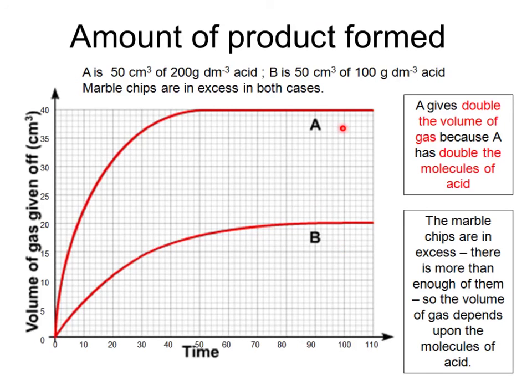A gives double the volume compared with B, because A has got double the molecules of acid, so it can make double the molecules of the carbon dioxide. Note also, there's a difference in the gradient between the two graphs, because acid A is double concentration, it will have a much faster initial rate of reaction as well.